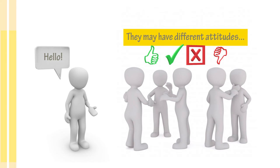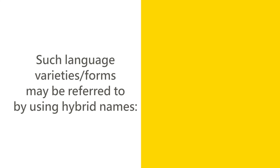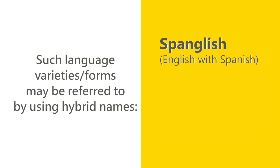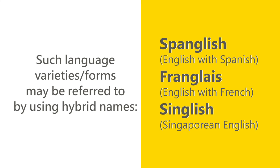Regardless of language attitudes, when people code mix, certain new ways of speaking emerge in those communities, and a kind of mixed language is created. There are many words in different communities that are hybrid words referring to that kind of linguistic behavior. For example, in the Spanish-speaking community there is 'Spanglish,' a mix of Spanish and English. Similarly, 'Franglais' refers to a mix of French and English, and 'Singlish' refers to English spoken by Singaporeans.